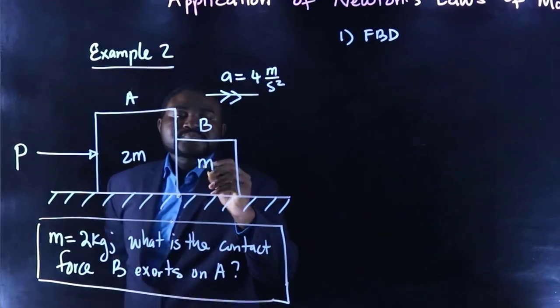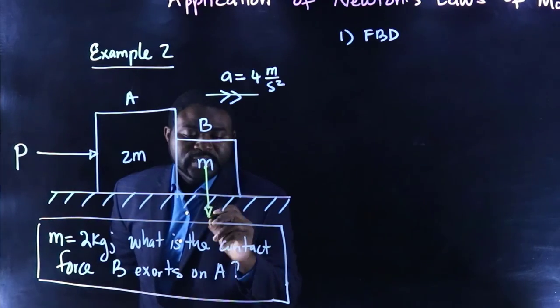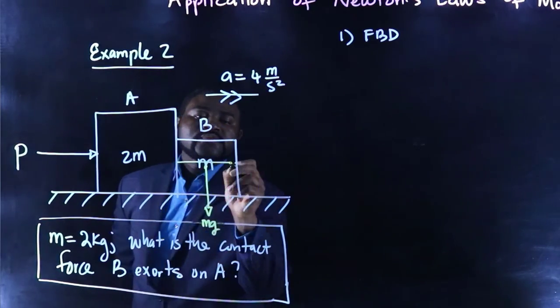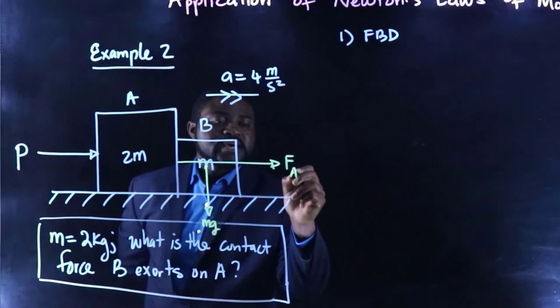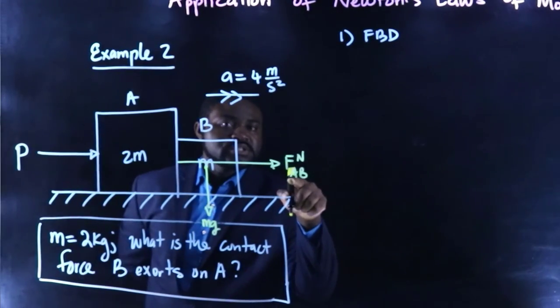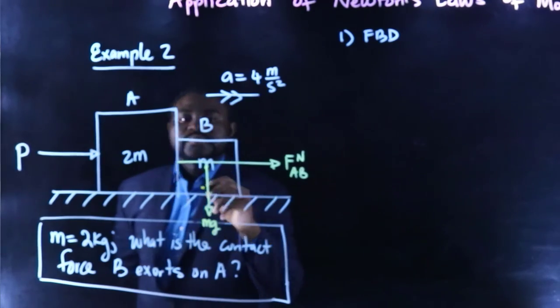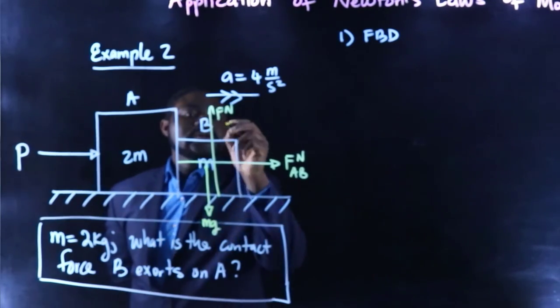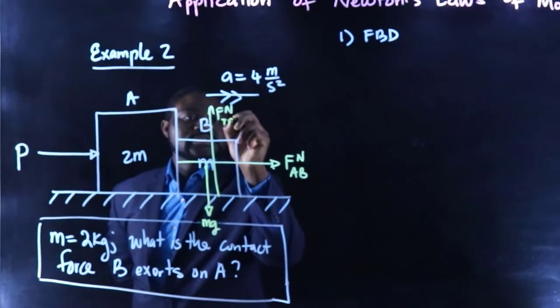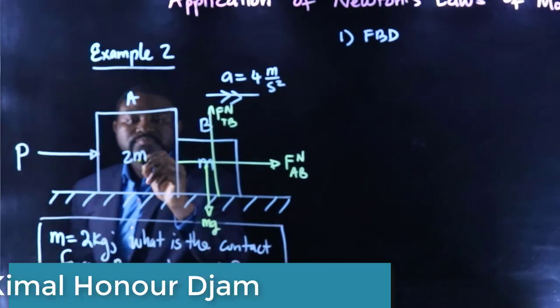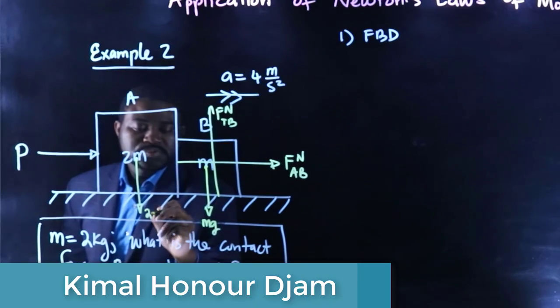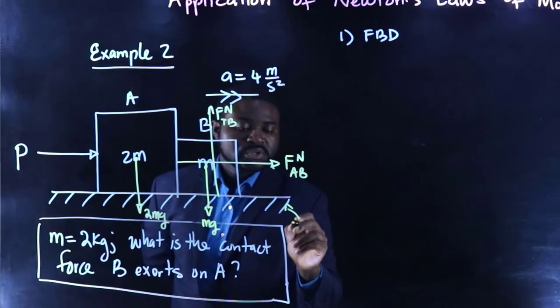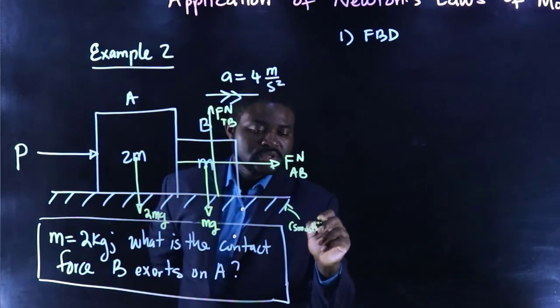So we have mg, we have FAB, the normal force that A asserts on B. FN, the normal force that the table asserts on B. This is 2mg. Now, remember that the surface is smooth, which means there is no friction.